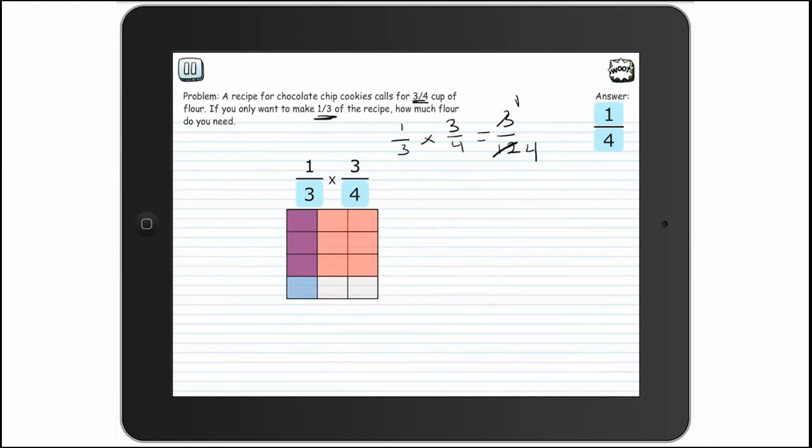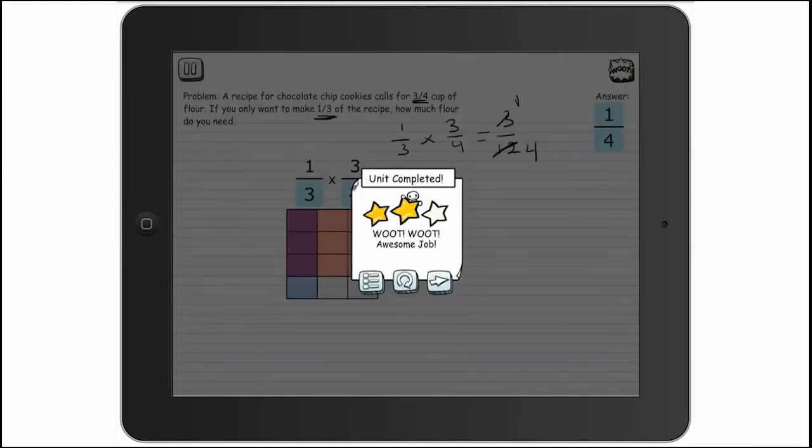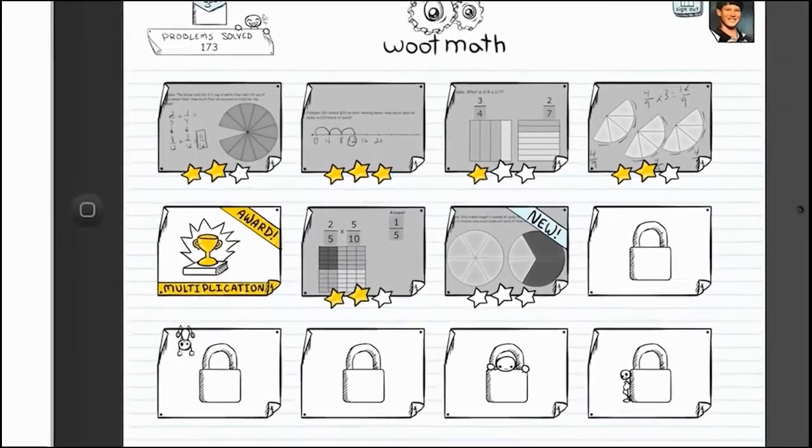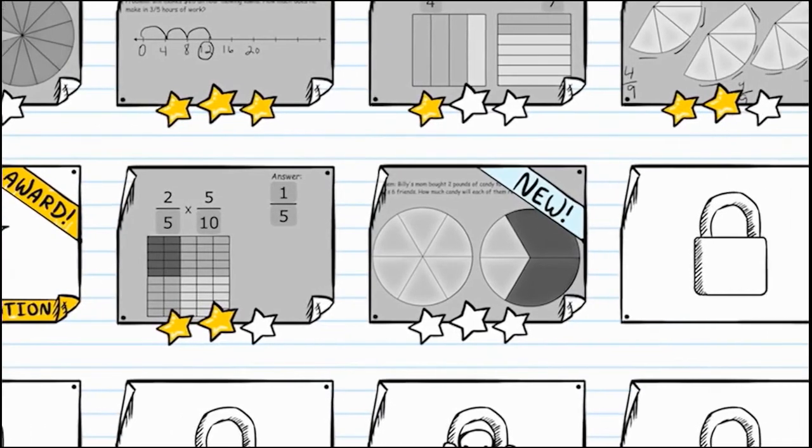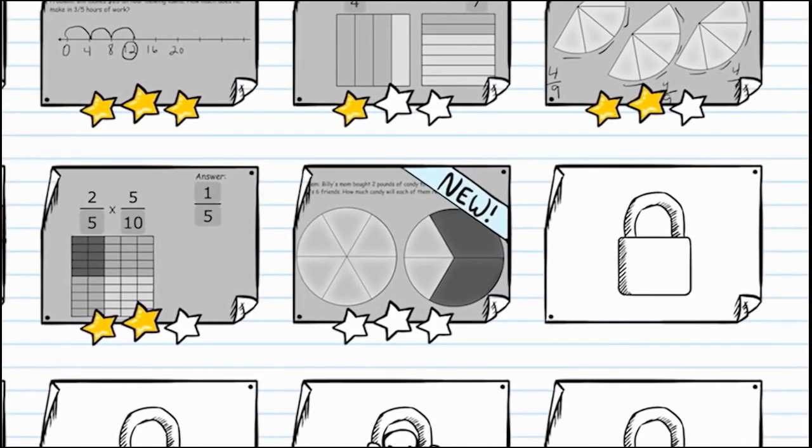When a lesson is completed, we share the results with the student. Awarding stars is a genuine representation of mastery. You can see that the current lesson reflects the two stars I just earned and a new lesson has unlocked. The new lesson that is unlocked is dynamically chosen by our adaptive learning technology.